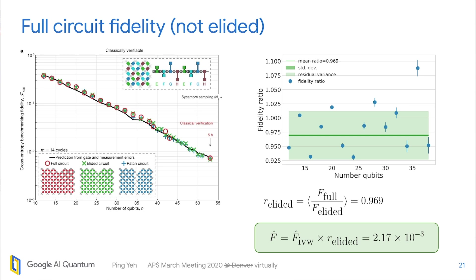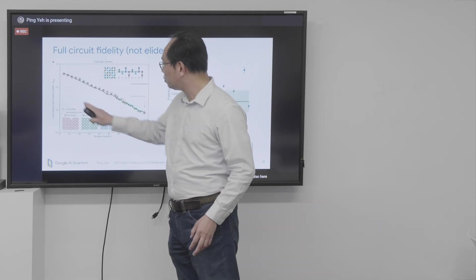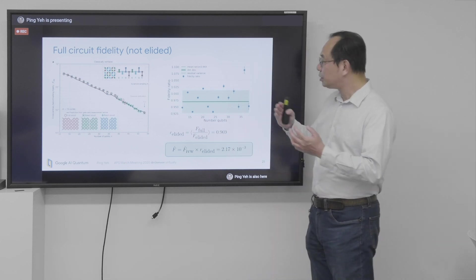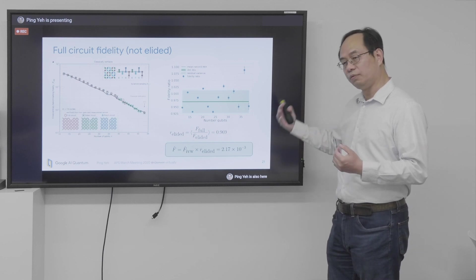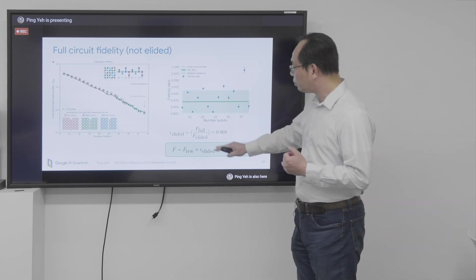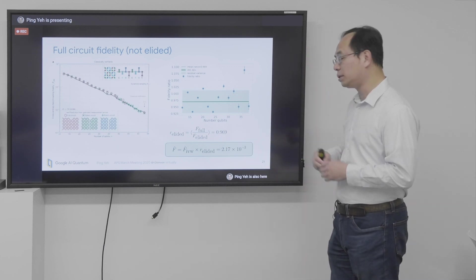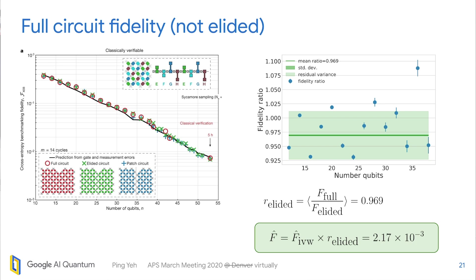So the next is we need to go into supremacy region where the classical computation of those probabilities is not possible. So we want, but nonetheless, we need to estimate the significance of a full circuit. So we go to a lower number of qubits, from 12 qubits to 38 qubits, and check the ratio between the full circuit and the elided circuit in a similar way of the elided circuit in 53 qubits. And we found out that the ratio of these two fidelity is about 97%. So that is a factor we apply to the combined fidelity for our estimate of the full circuit fidelity, which is this value.